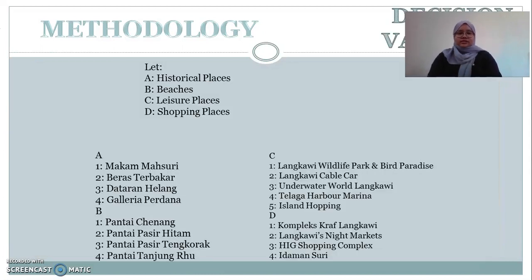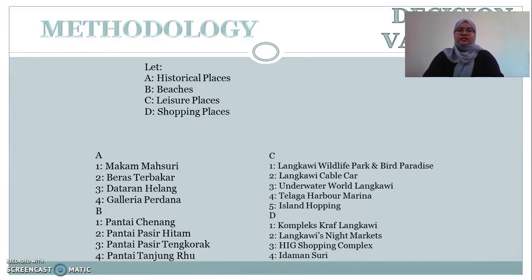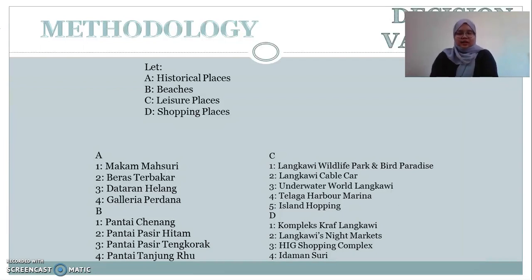For the decision variables, we categorized the places into four categories: A is historical places, B is beaches, C is leisure places, and D is shopping places. Category A includes Makam Masuri, Beras Terbakar, Dataran Helang, and Galeria Perdana. Category B includes Pantai Cenang, Pantai Pasir Hitam, Pantai Pasir Tengkorak, and Pantai Tanjung Ru. Category C includes Langkawi Wildlife Park and Bird Paradise, Langkawi Cable Car, Underwater World Langkawi, Telaga Harbour Marina, and Island Hopping. Category D includes Complex Craft Langkawi, Langkawi Night Market, HIG Shopping Complex, and Idaman Suri.